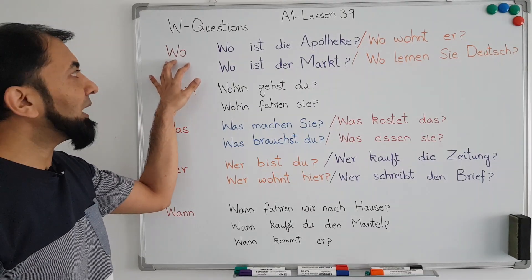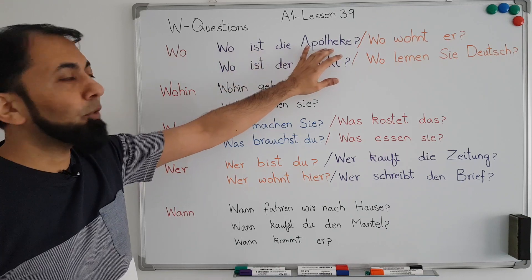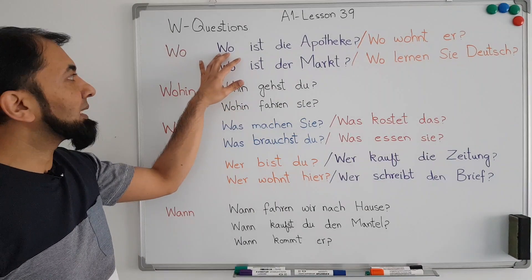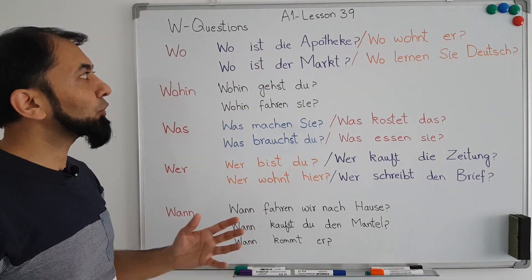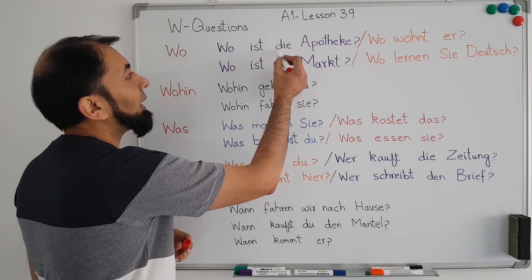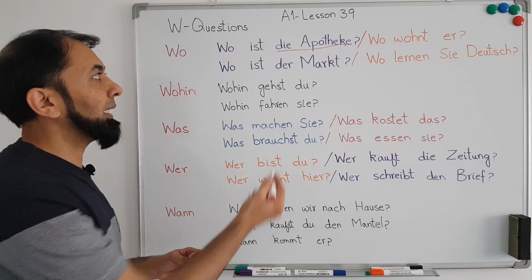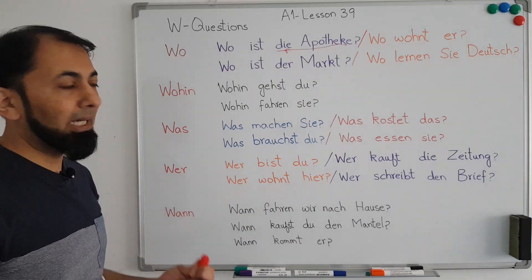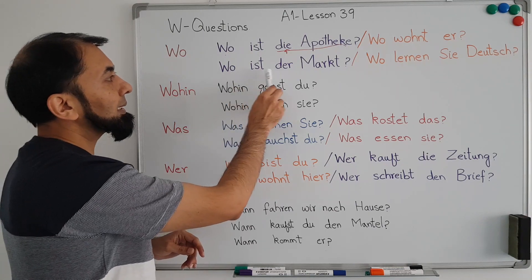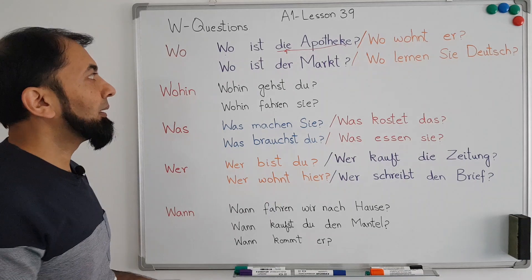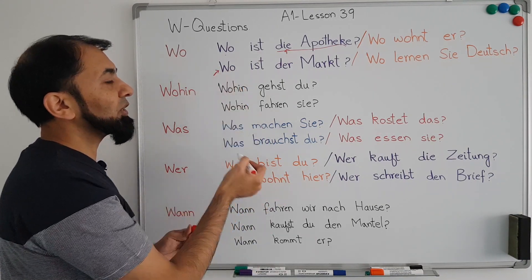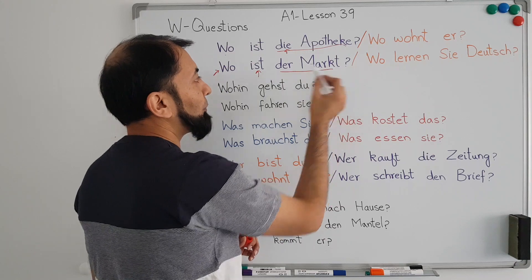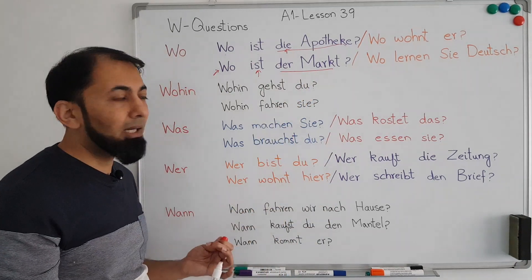The first W-question word is 'wo', which means 'where'. For example: 'Wo ist die Apotheke?' means 'Where is the medical store?' In this sentence it starts with the W-question word 'wo', and at the second position we have the verb, conjugated according to the subject 'die Apotheke'. Apotheke is a feminine noun in German. Next: 'Wo ist der Markt?' means 'Where is the market?' — the same structure applies.